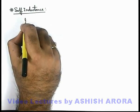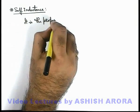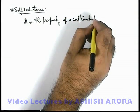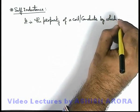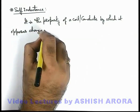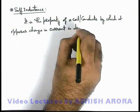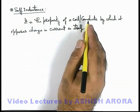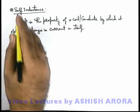About self-inductance we can write that it is the property of a coil or a conductor by which, or due to which, it opposes the change in current in itself. Whenever a current flowing through a coil or conductor changes, the coil or conductor itself opposes the change in current. This property is called self-inductance.